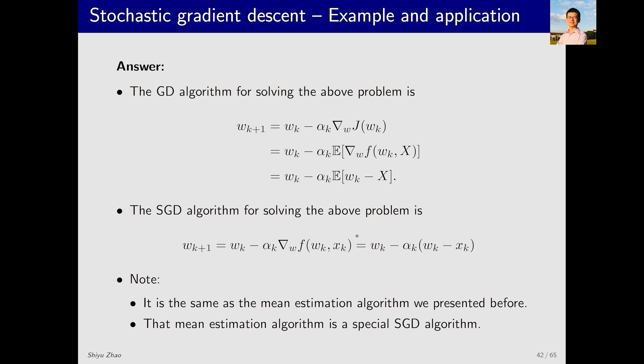This algorithm might look familiar to you. The algorithm w_{k+1} equals w_k minus alpha_k times (w_k - x_k) is actually the algorithm that we introduced at the beginning of this lecture for solving the mean estimation problem. That is, I have an x and want to find its expectation, E[x]. How do I do this? I have a set of samples x_i, and by putting these x_i one by one into this algorithm, I can eventually approximate the expectation. This is what we introduced at the beginning of this lecture.